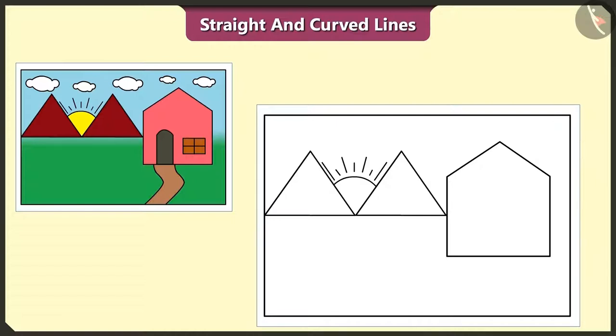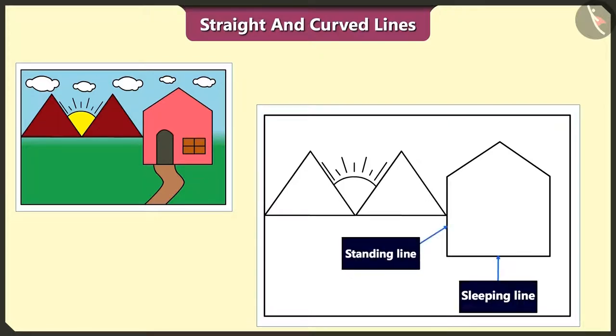So, here which of these lines are straight? Here, the standing line, the sleeping line and the slanting lines are all straight lines.